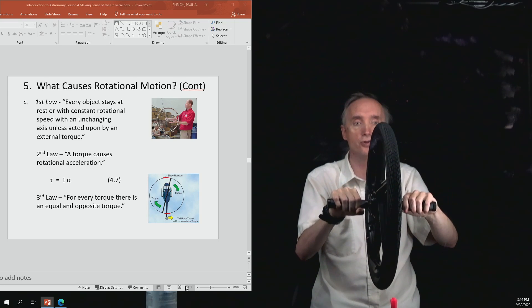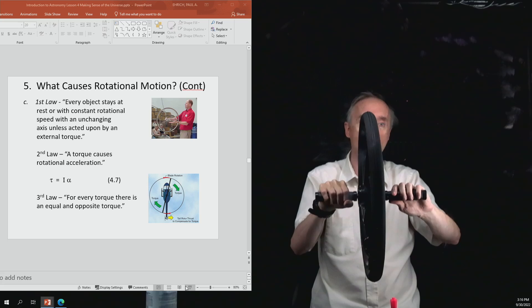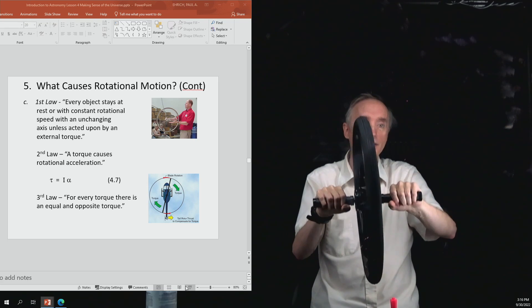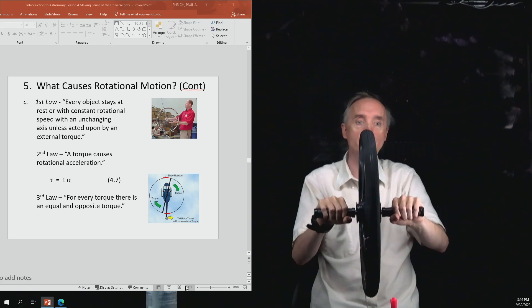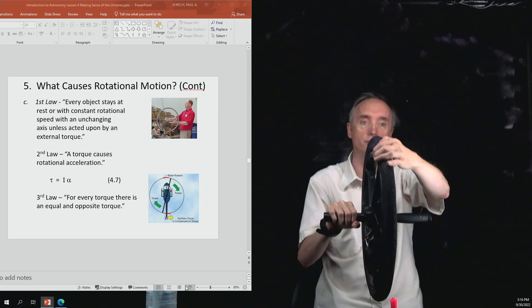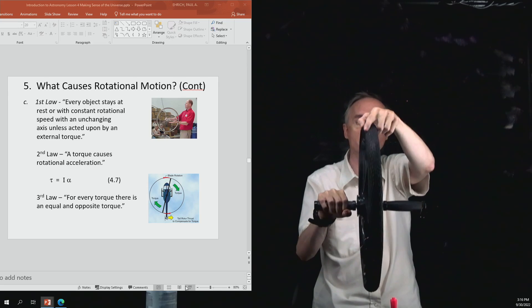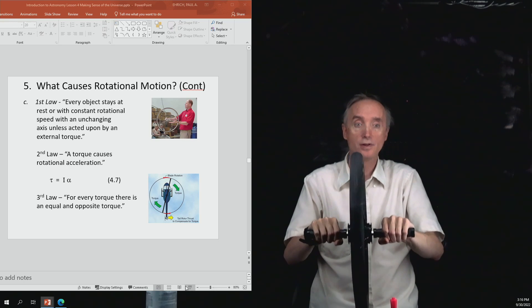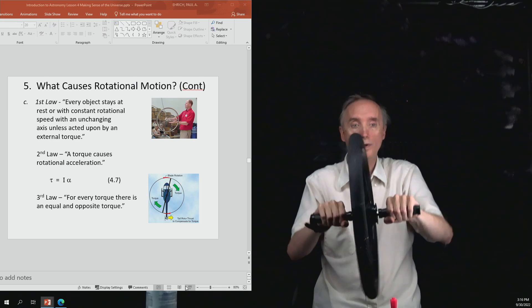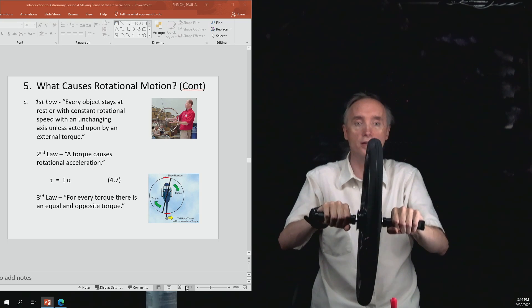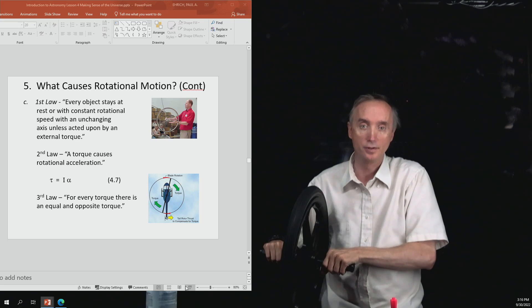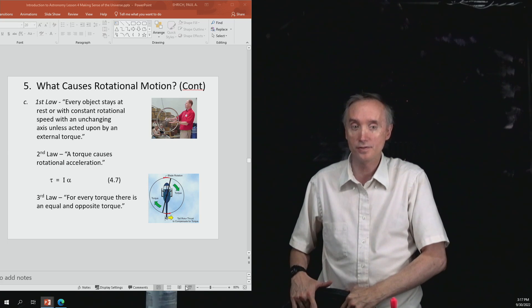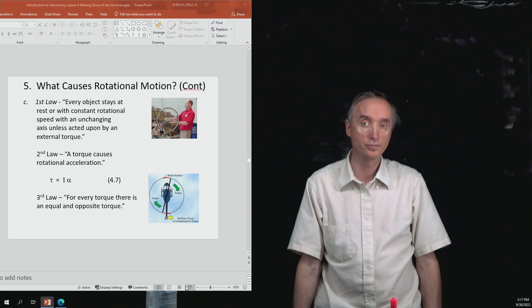So his first law of motion says that if an object is spinning, it will want to continue to spin forever and ever at a constant speed, and the axis will want to point in one direction forever and ever. Now you can prove that with this wheel. So I know it's really hard for you to see this or to feel it, but if I move this thing like this and then I take my hands and I try to move the axis, what I find is it's really hard to move the wheel. So once the wheel is moving, it's hard to change the direction that the wheel is spinning. So that's his first law of motion. An object wants to continue to spin forever and ever at a constant speed, and the axis does not want to change.